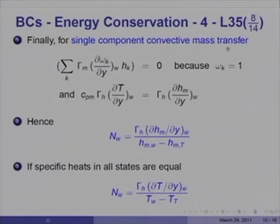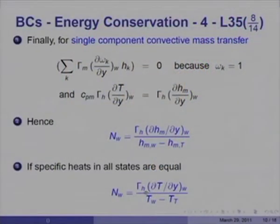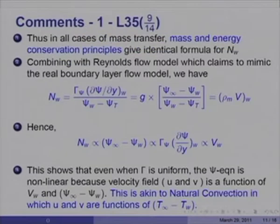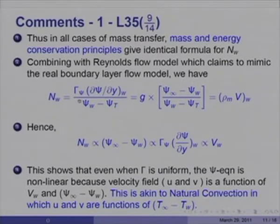Single-component convective heat transfer means, for example, a boundary layer formed with air where you inject air itself from the wall at a given rate. If we further assume specific heats do not vary between W, T, and infinity states, then Nw equals γ_H (dT/dy at W) divided by (T_W minus T_T). Thus in all cases of mass transfer, mass and energy conservation principles give identical formulae for Nw. Combining with the Reynolds flow model, Nw equals γ_ψ (dψ/dy at W) divided by (ψ_W minus ψ_T), which equals G times B, and must also equal ρ_M V_W.